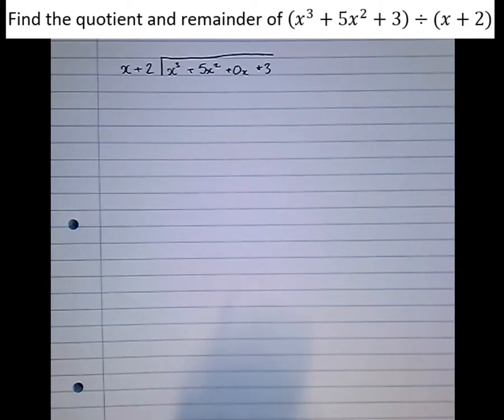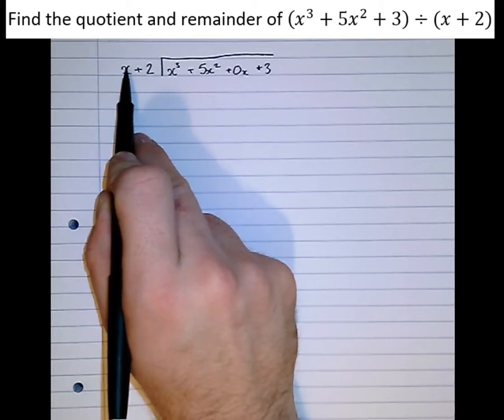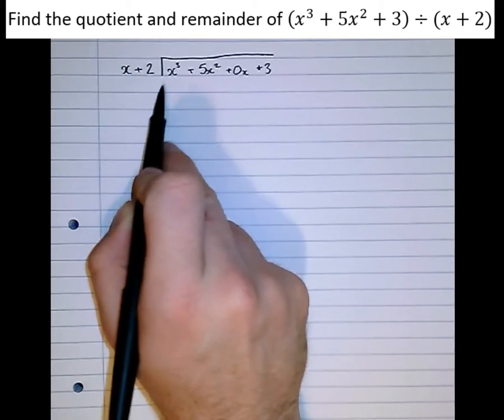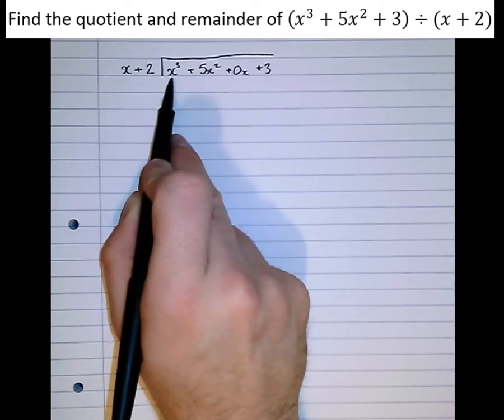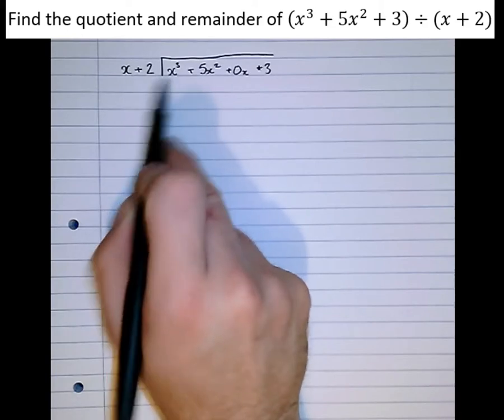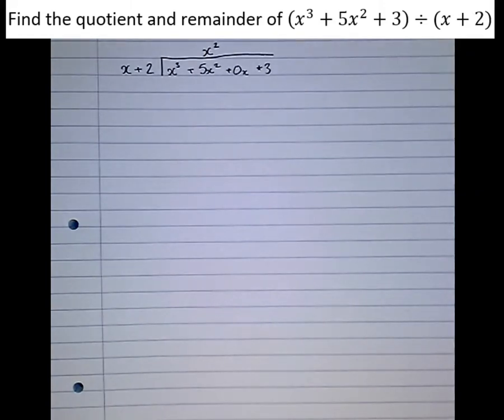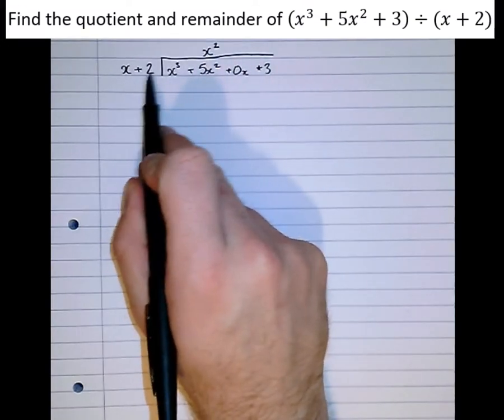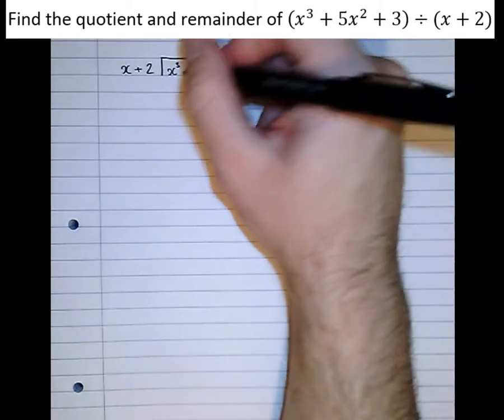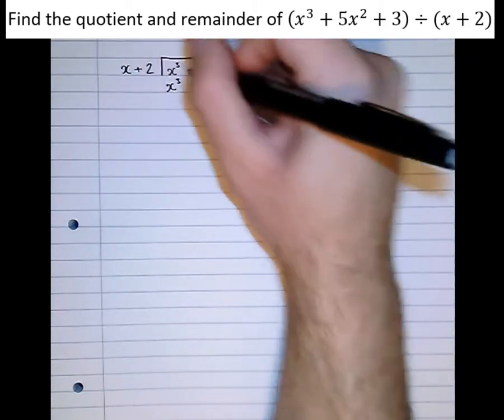So what we're going to do now is take the highest power of x in the bit that's being divided, and see what we'll have to times it by to get to the highest power of x in here. So we have to times this by x squared to get to there. Therefore the answer to this part of the division is 1x squared. I'm going to write that above the x squared terms. Next step, take what we've just written and multiply it by what we're dividing by and write it underneath here. So that becomes x cubed plus 2x squared.